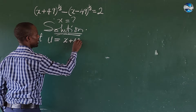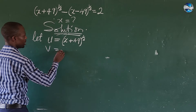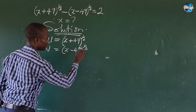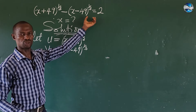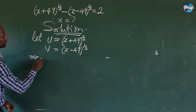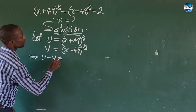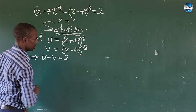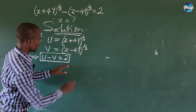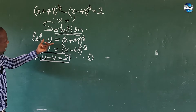From here, I'm going to use a quantity to represent each term. Let u equal (x + 49)^(1/3) and another variable v to represent (x - 49)^(1/3). So we can rewrite the original equation: this now gives us u minus v equals 2. This is a special expression we'll be making use of. Let's call this equation 1.